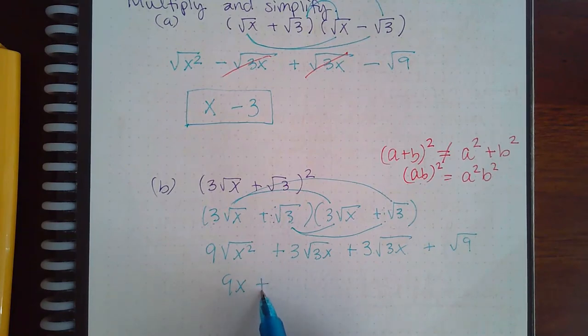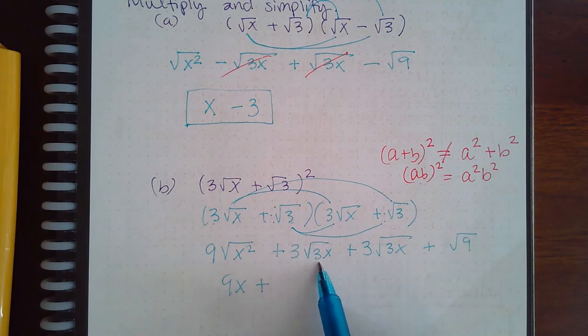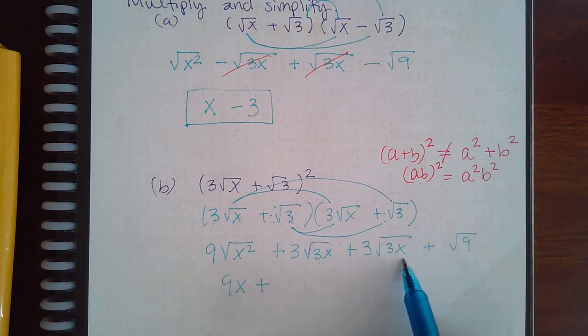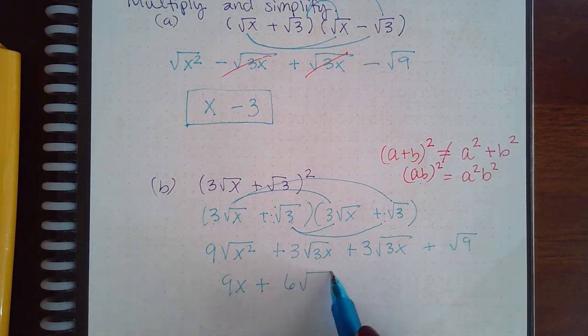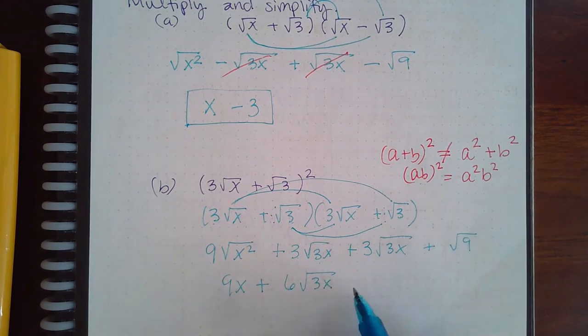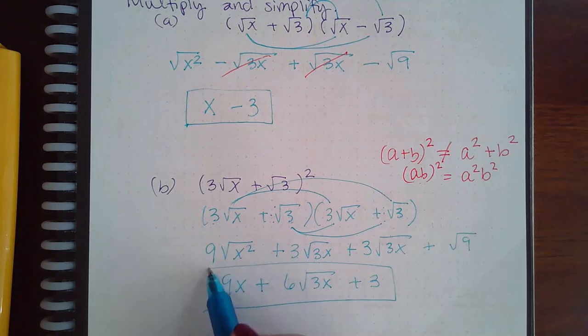This is just x. Here you have 3 square root of 3x plus 3 square root of 3x. That gives me 6 square root of 3x. And then the square root of 9 is 3. And so this is the final answer.